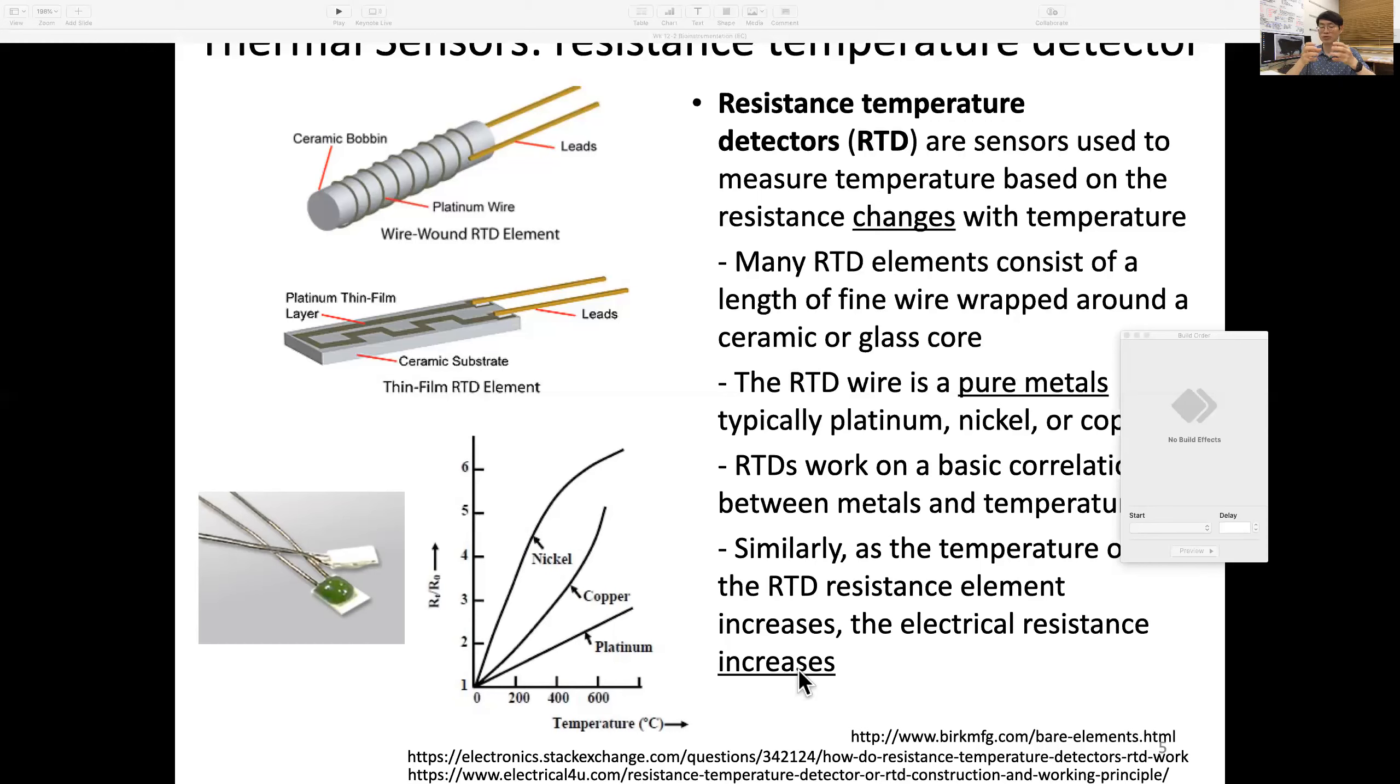This is my theory on this: the ceramic or glass substrate thermally expands when temperature rises. Since this is a very thin wire, it elongates, so the diameter or cross-section goes down and resistance goes up.